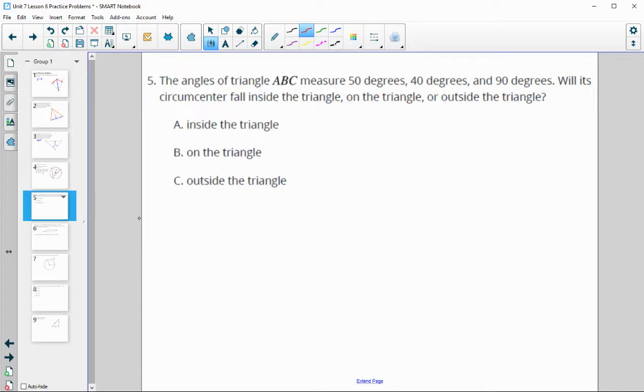Number 5 says the angles of a triangle measure 50, 40, and 90 degrees. Will its circumcenter fall inside, on, or outside the triangle? For a right triangle, the circumcenter is on the triangle, so it actually lands right on the hypotenuse.